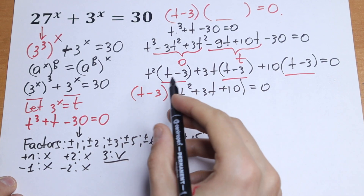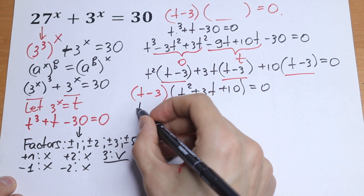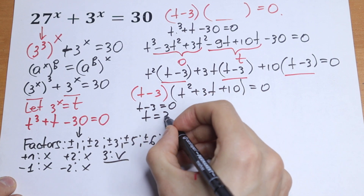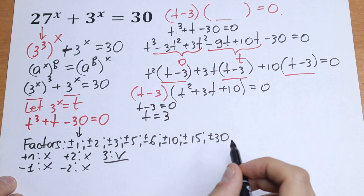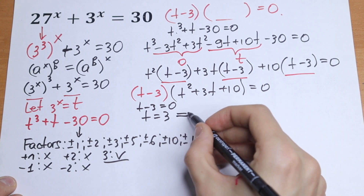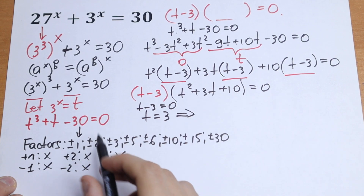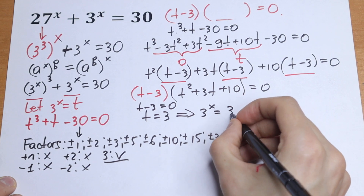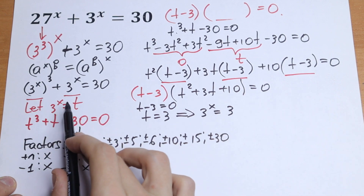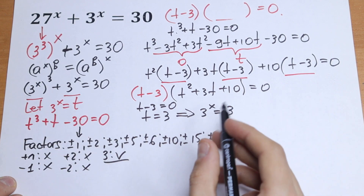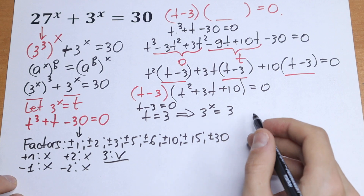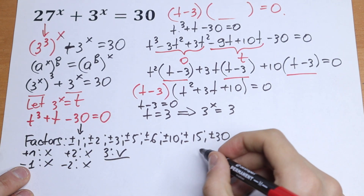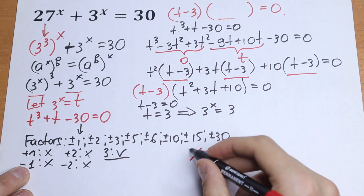The obvious solution is t minus 3 equals zero, so t equals 3. We can quickly find x: since 3 to the power x equals t and t equals 3, we have 3 to the power x equals 3, giving our first root x equals 1.